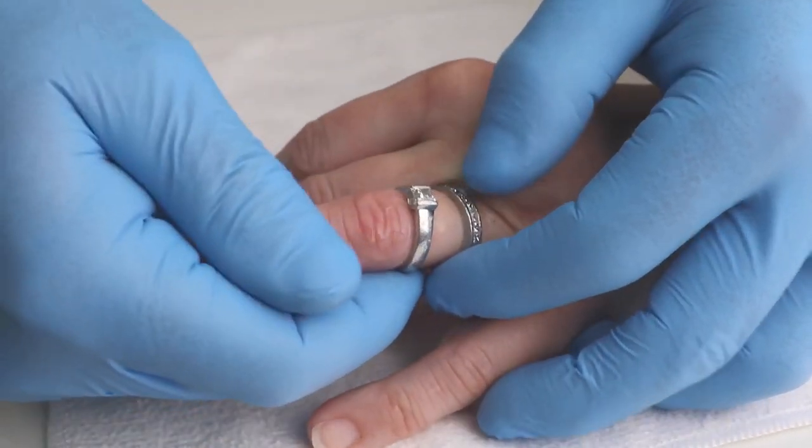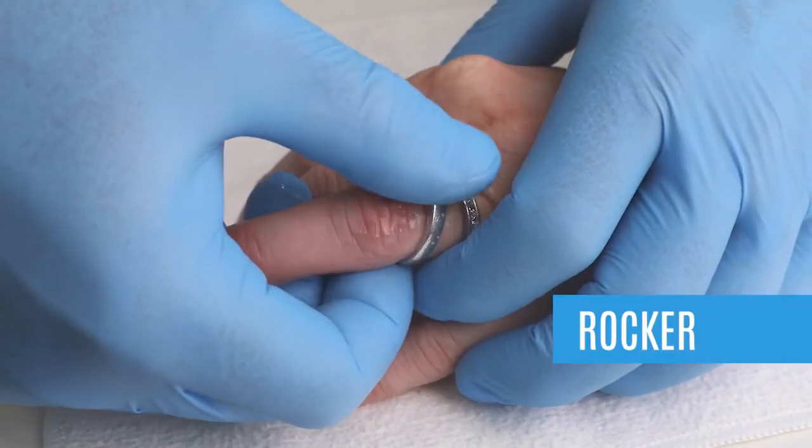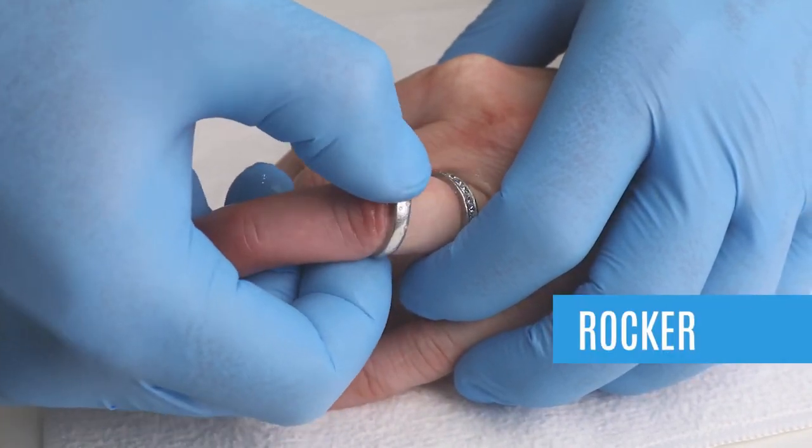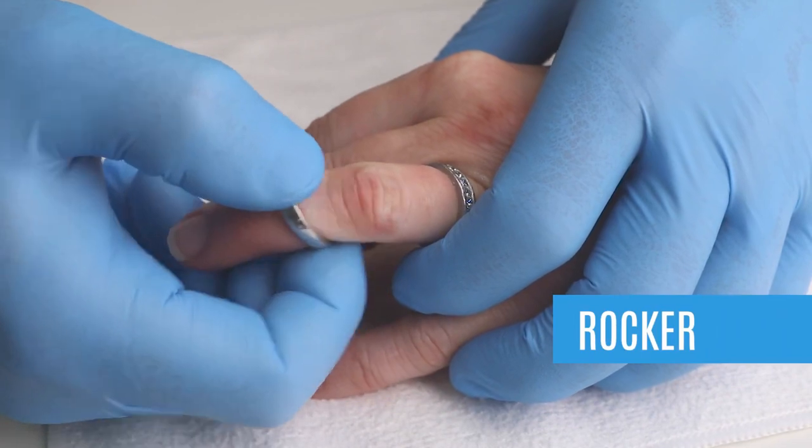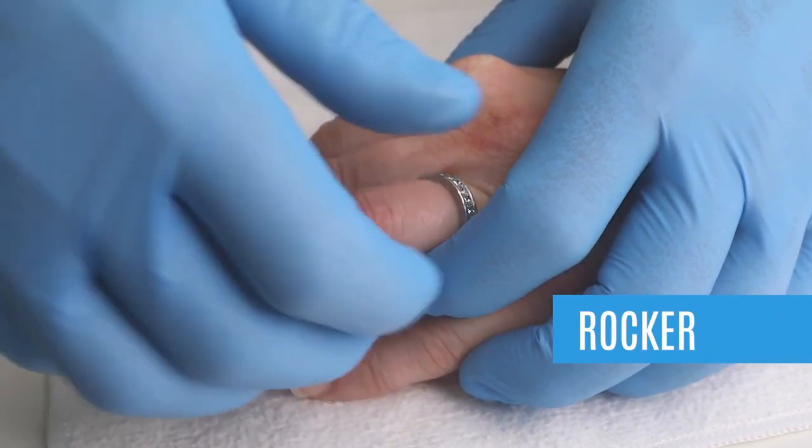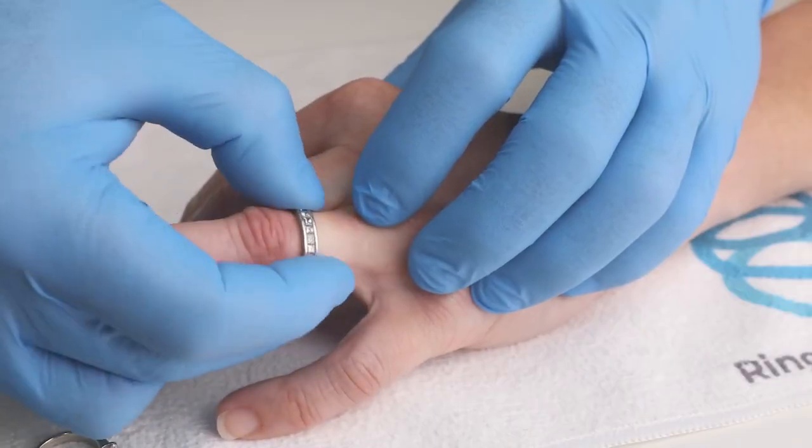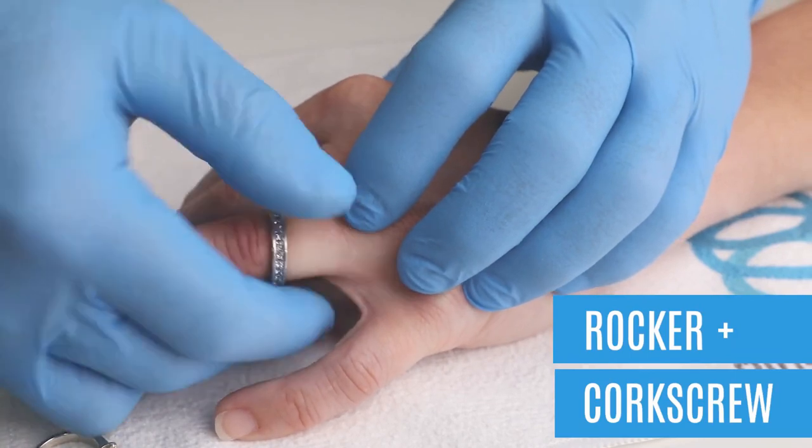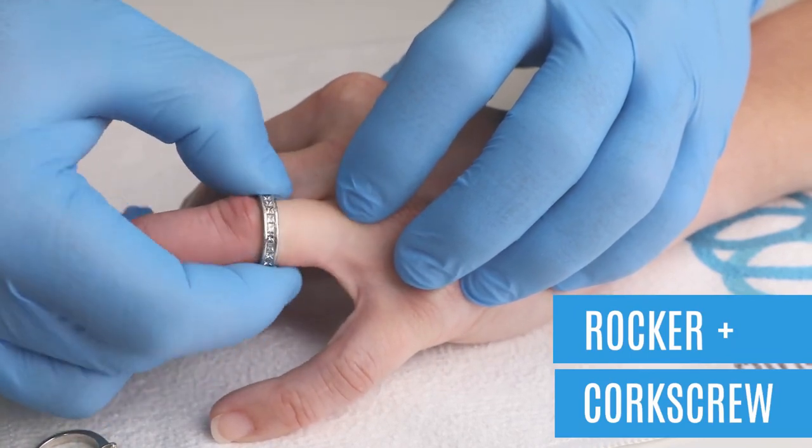If meeting resistance from the tissue, you can attempt what we call the rocker technique, which is walking the ring off the finger in a back-and-forth motion. But remember, slow and steady. If still meeting resistance, use the rocker with the corkscrew motion as they can work together to get the skin underneath the ring.